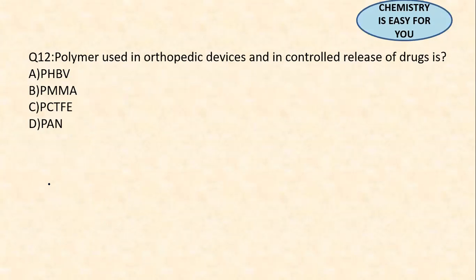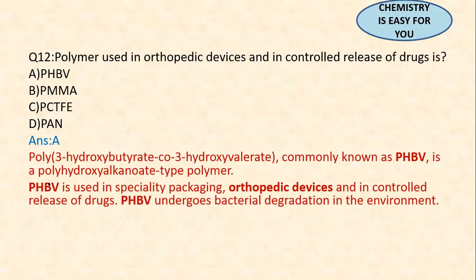Question 12: the polymer used in orthopedic devices and controlled release of drugs is PHBV — poly(3-hydroxybutyrate-co-3-hydroxyvalerate). PHBV is used in packaging, orthopedic devices, and controlled drug release. It is a biodegradable polymer that undergoes degradation using bacteria in the environment. Try to memorize the full name: poly(3-hydroxybutyrate-co-3-hydroxyvalerate), abbreviated as PHBV.